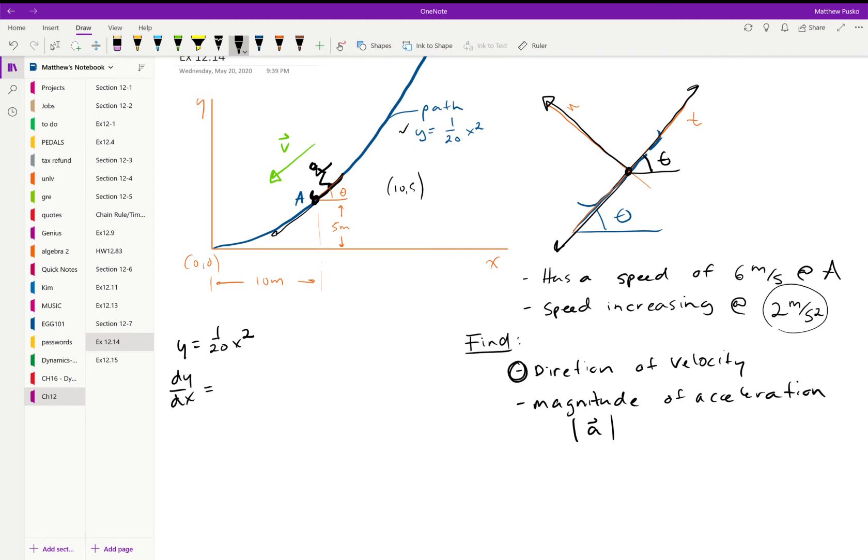That would give us x over 10, and we would evaluate that at x equals 10. That gives me 1. Where would the slope be 1? That means we're going up 1 and over 1. That's a 45 degree angle. So we can say theta equals 45. Now we have our velocity: it's 6 meters per second at an angle of 45 degrees.